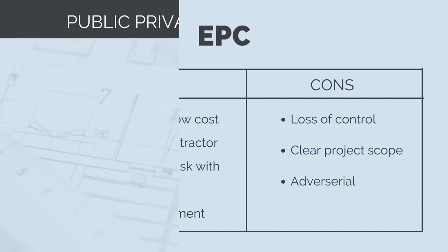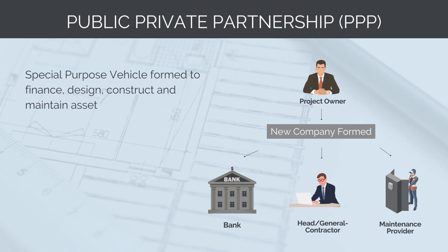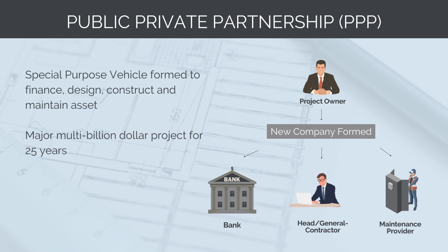The final contract model is the public-private partnership, or PPP. This is a special form of contract where the project owner outsources the finance, design, construction and maintenance. A contractor forms a team with a bank, design consultant and maintenance contractor, and bids to deliver the project. The project owner then pays a fixed fee per year across a period of usually around 25 years. Under this form of contract, the highest level of risk and responsibility is outsourced. PPPs are only used for multi-billion dollar projects with government bodies — examples include the Melbourne Metro Tunnel or Peninsula Link Freeway in Australia.